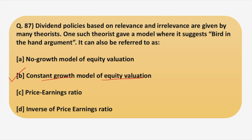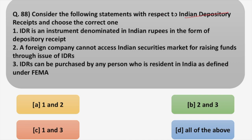Moving on to the next question on Indian Depository Receipts. While discussing depository receipts, I covered the three types: ADR, GDR, and IDR. To recall: IDR is an instrument denominated in Indian rupees in the form of a depository receipt, created by a domestic depository against the underlying equity of an issuing company, to enable foreign companies to raise funds from Indian security markets.